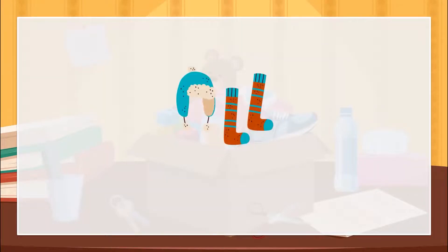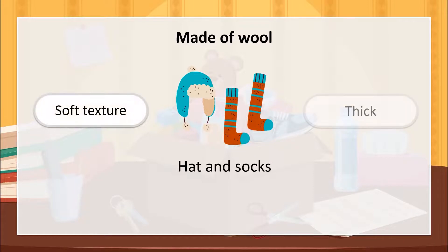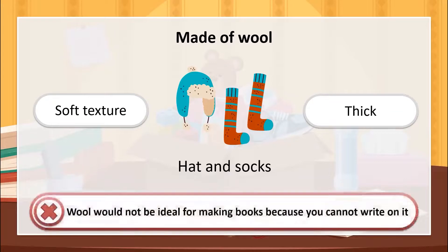The hat and socks are made of wool. Wool is a soft material and it is thick, so it can protect our body from the cold. Wool would not be ideal for making books, because you cannot write on it.